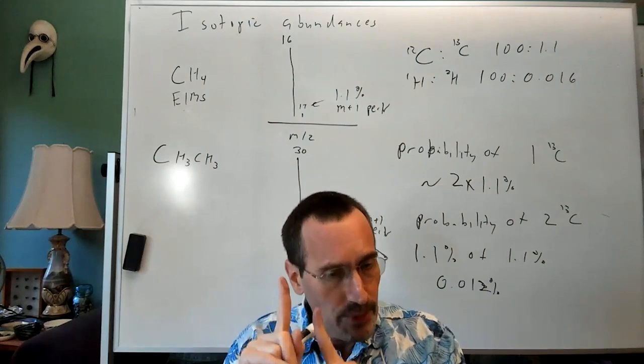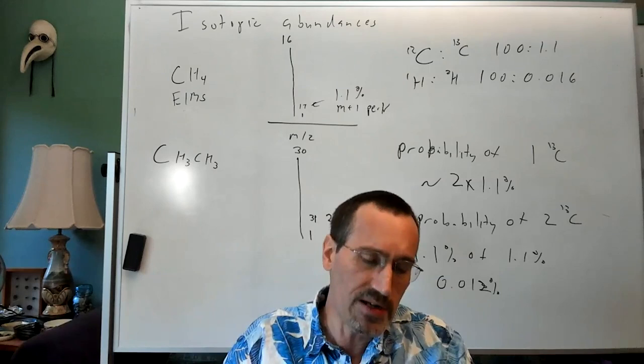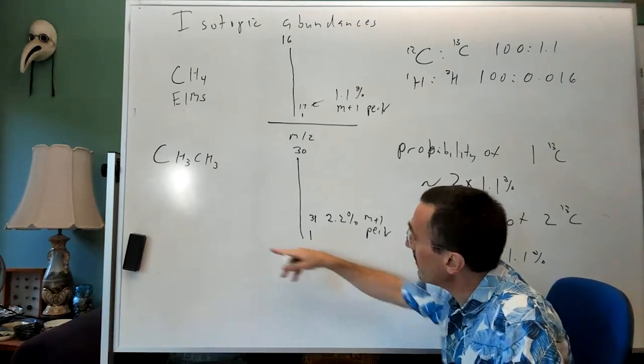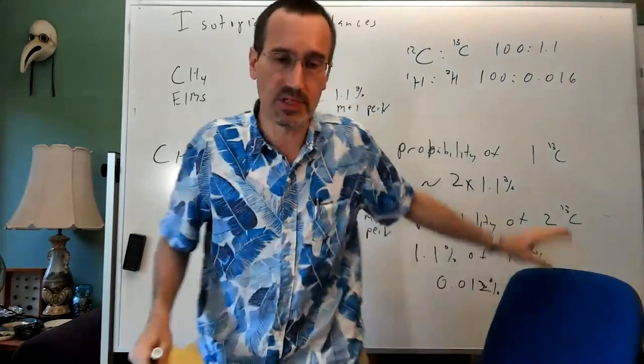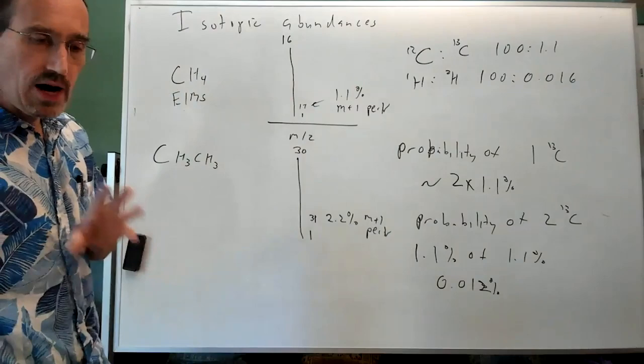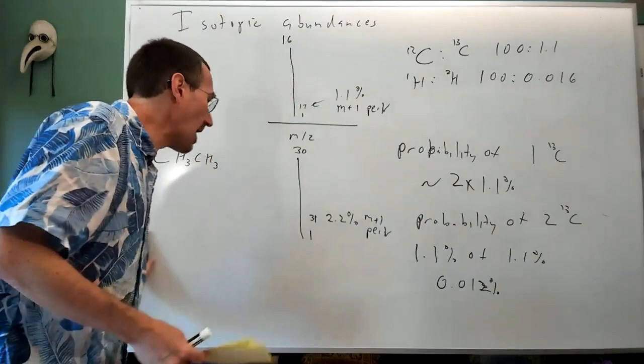Now there is a teeny, tiny probability of having 2 C13s. So the probability of 2 C13s is going to be 1.1% of 1.1%. So if we had very good sensitivity and no noise or interference, you could look over here and see a peak with 2 C13s. Now, by the time you get up to really big molecules, like with 90 carbons or 92-ish carbons, by that point the probability of having 1 C13 is actually as great as the probability of having all C12s. So by the time you get to really big molecules with 100 plus carbons, you will see the M plus 1 peak is bigger than the M peak.